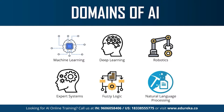Expert systems are AI-based computer systems that learn and replicate the decision-making ability of a human expert. They use if-then logic to solve complex problems without relying on conventional procedural programming. Expert systems are mainly used in information management, fraud detection, virus detection, and managing medical and hospital records. These were the different branches of artificial intelligence.